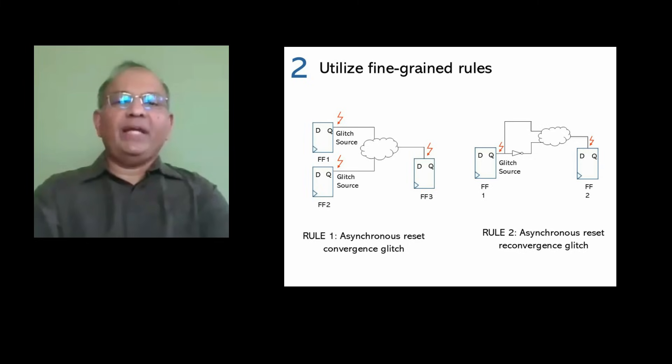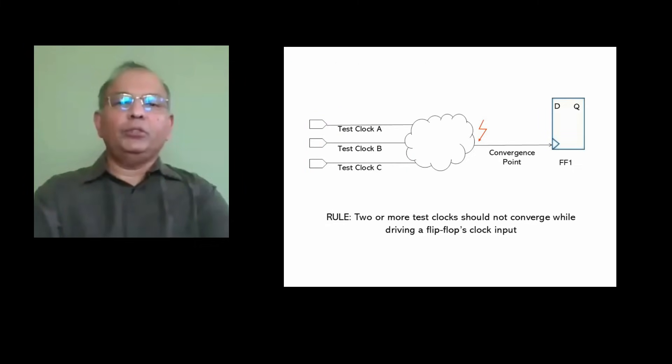Number two, fine-grained rules will reduce noise in violation reports. There should be no overlap between rules. This example shows two mutually exclusive rules for glitches due to convergence versus reconvergence. Rules should also eliminate reporting duplicate violations for the same error root cause. For example, the precise test block glitch convergence rule shown will only report one error.